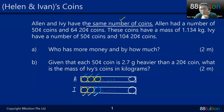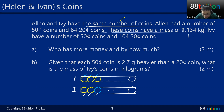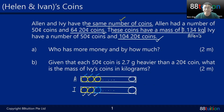Here comes the first clue: Alan has some 50-cent coins — we don't know how many, so let's focus on what we know. We know Alan has 64 twenty-cent coins. These coins have a mass of 1.134 kg — that is only for Alan's coins. Continuing: Ivy has some 50-cent coins — unknown — but we know Ivy has 104 twenty-cent coins.